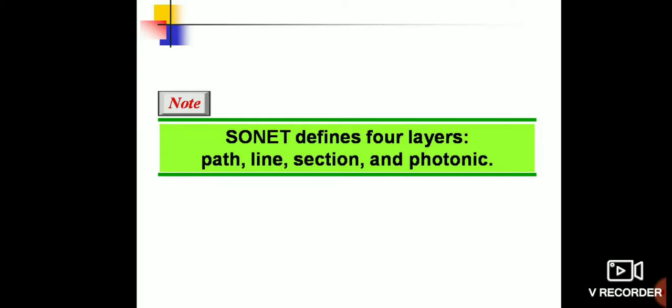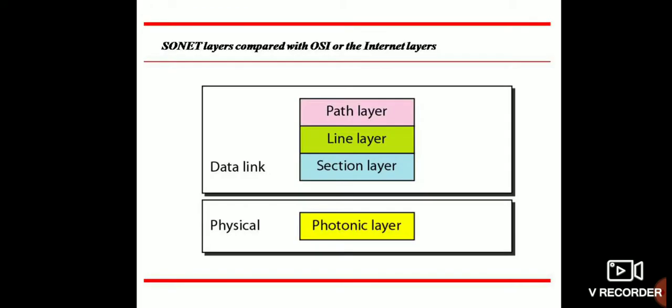SONET defines four layers: path, line, section, and photonic. The data link includes path layer, line layer, and section layer. And physical is the photonic layer.